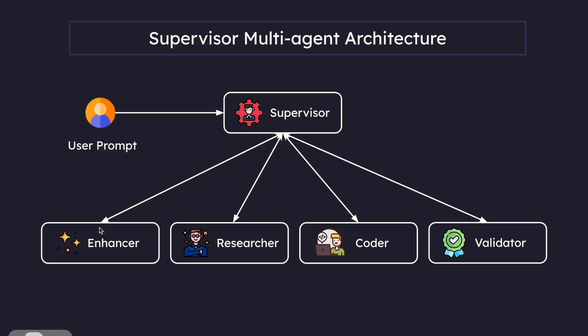After the enhancer is done, the control flow comes back to the supervisor agent again. Now the supervisor knows the prompt is better. It's going to look at whether this particular prompt requires research from the internet. In that case, it's going to hand off control to the researcher, and once the researcher is done, it's going to come back to the supervisor.